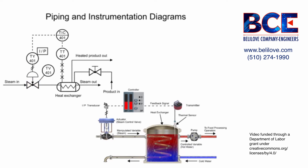In the top portion of the symbols is the functional identifier, and the first letter denotes the measured variable. The first letter of each functional identifier is the letter T, which defines the process of temperature control.